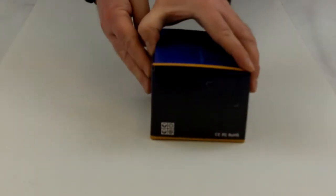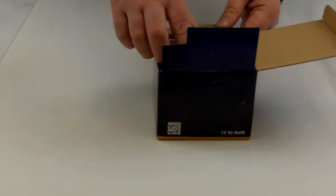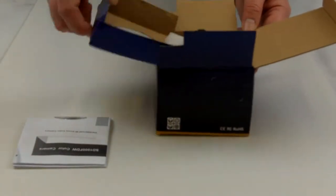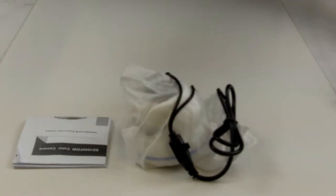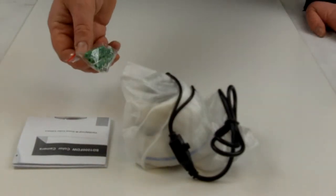What's inside the box is a user guide, the camera, and some installation screws and wall plugs.